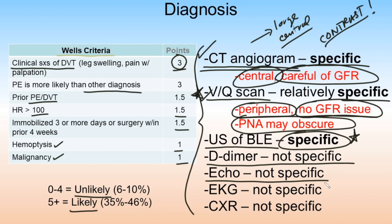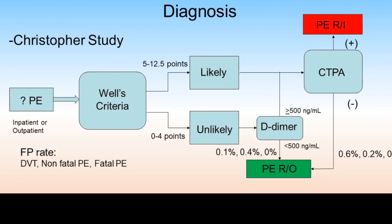Echocardiography is non-specific, though you may occasionally see the apex sign. EKG is also non-specific — the classic pattern is S1Q3T3. Chest X-ray is non-specific as well, but Hampton's hump and Westermark sign are interesting findings worth knowing, even though they lack sensitivity and specificity.